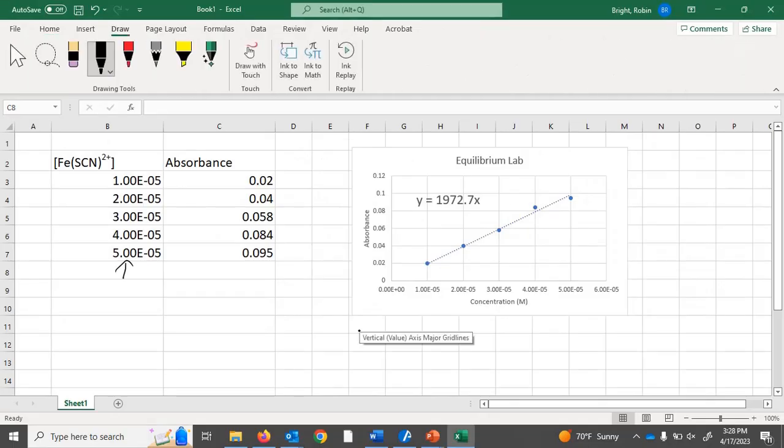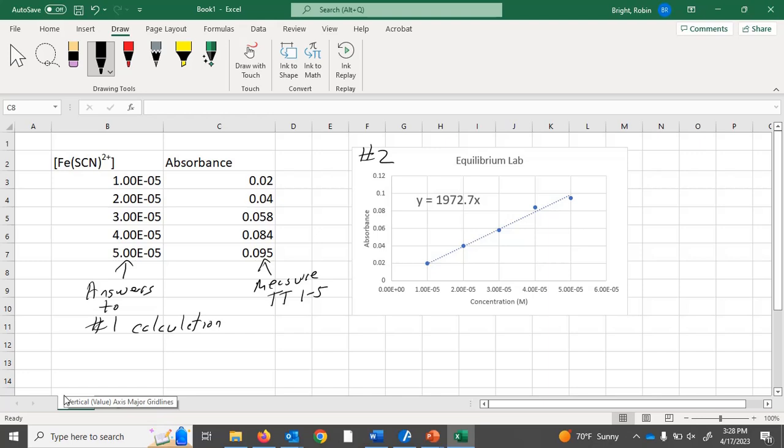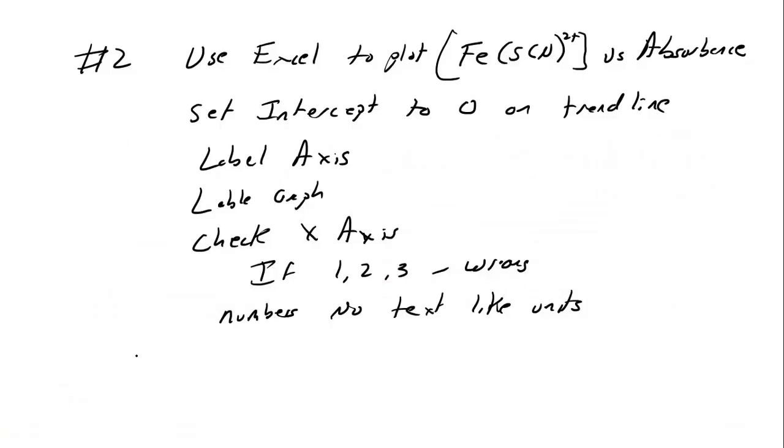So these right here, which I should have ink, this right here was the answer to number one. And this is number, this is really number two here. Oh, you measured it. Measure. This is test tubes one through five. So TT is my short way of saying test tube. So I'm done with one through five. So post-lab one and two calculations is test tubes one through five. All the rest of it is six through ten.